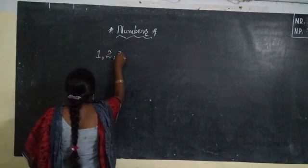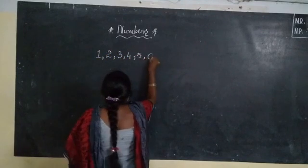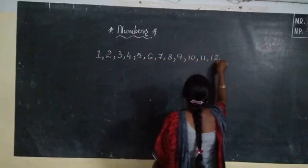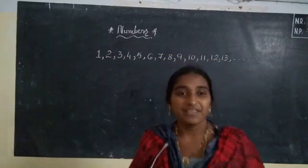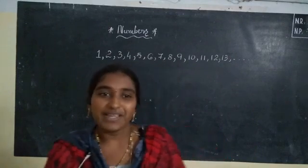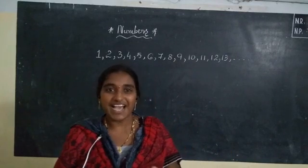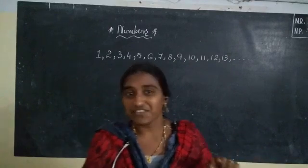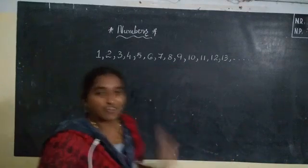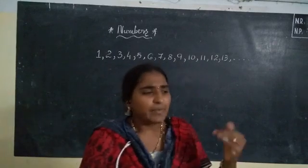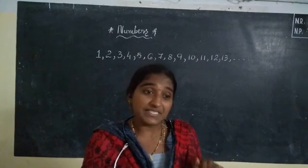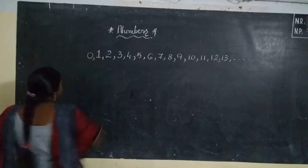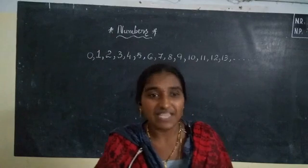We have learned all these numbers in our earlier classes. Nine, then ten, eleven, twelve, thirteen... Can anybody say what is the last number? Nobody can say the last number because numbers are infinite. We can't say what the last number is, but we can say the first number is one. For example, if nobody attends school, how do we represent zero children present? It is zero — there are zero children in the class.